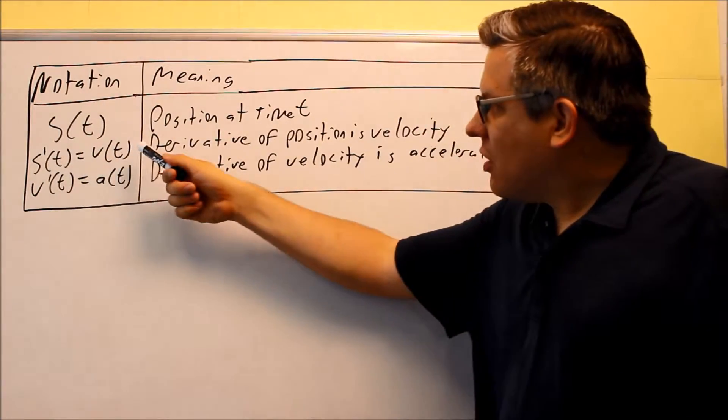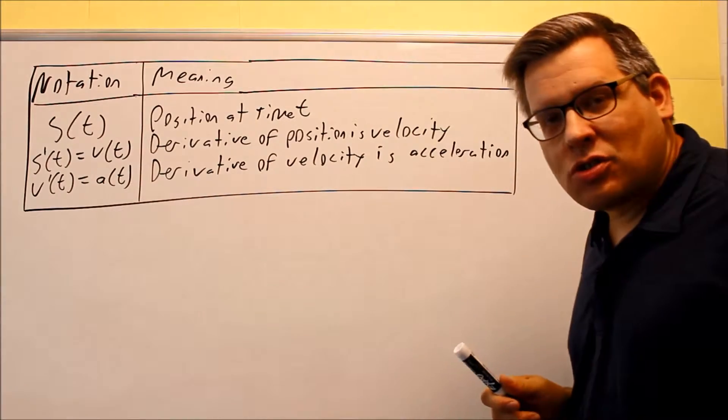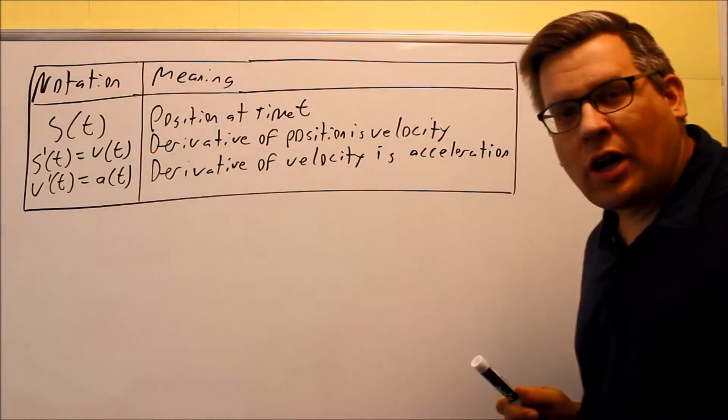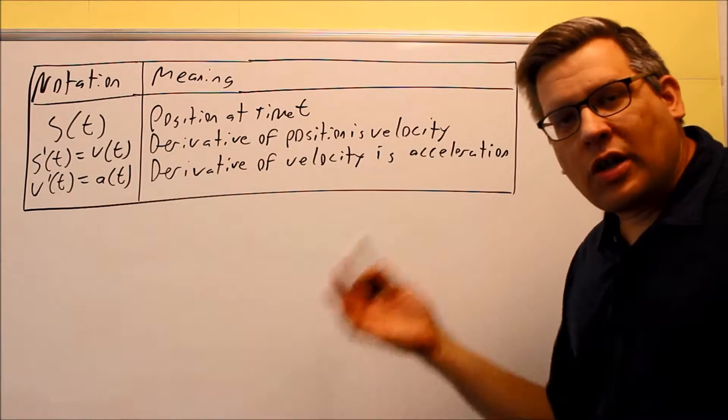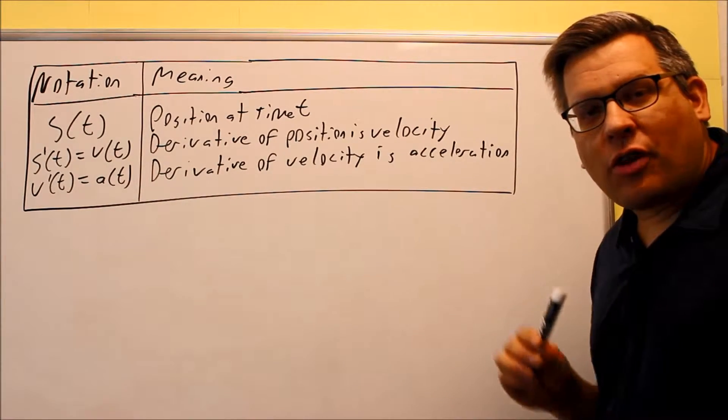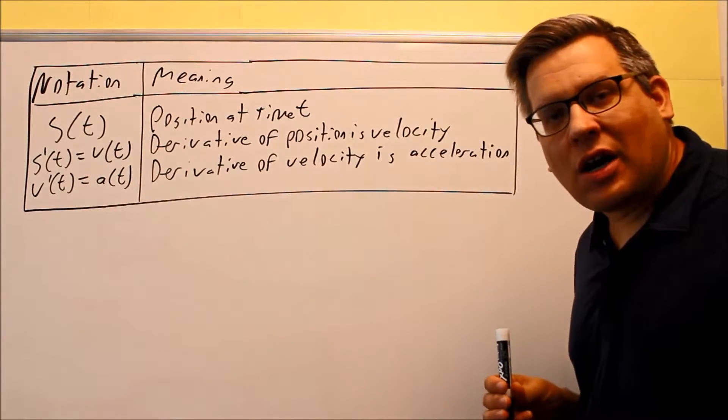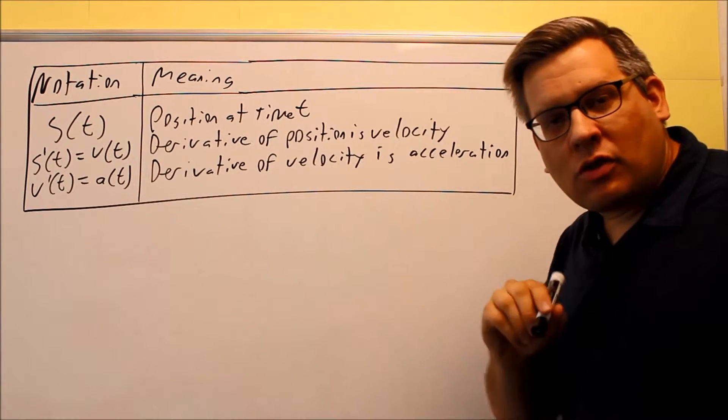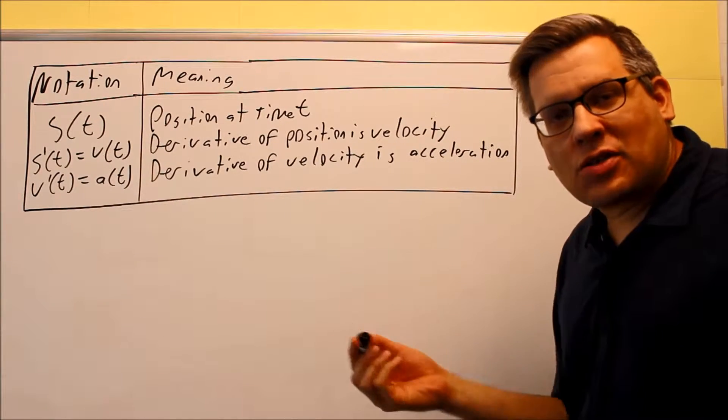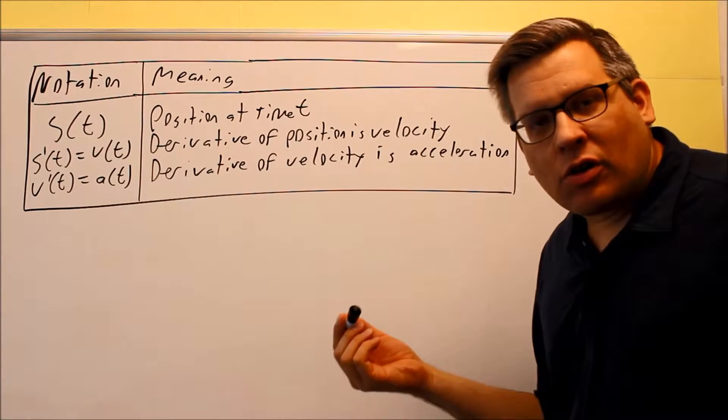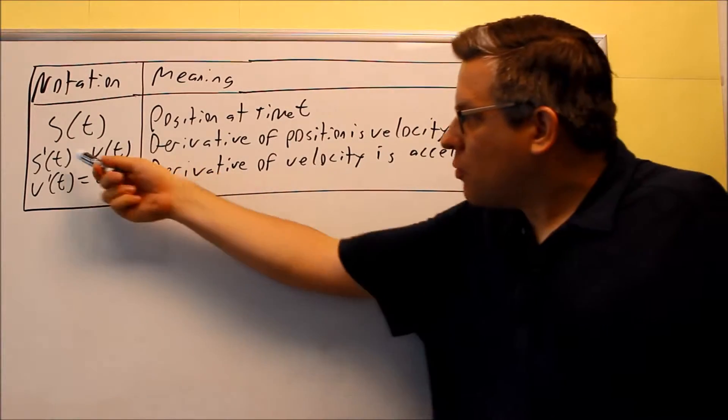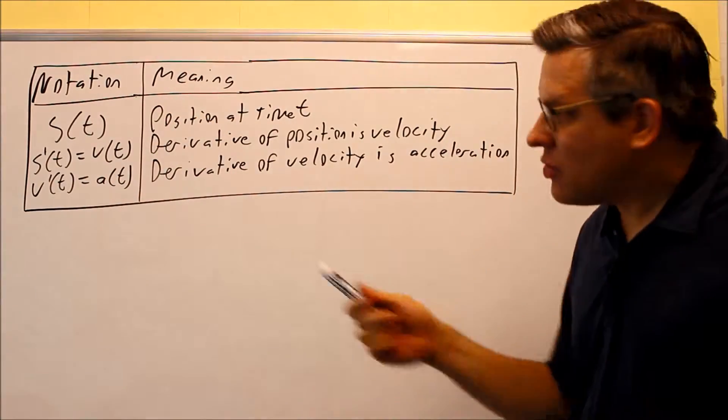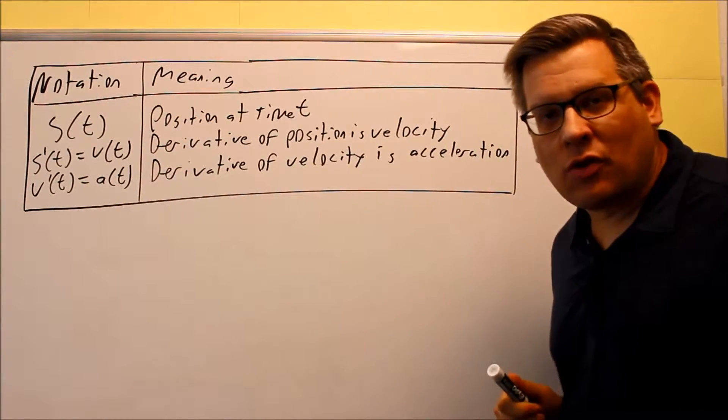Second thing is if we take the derivative of position, we're going to get our velocity function. So the derivative of position is velocity. If we had a graph of position versus time, if we look at the slope, we might get something like miles per hour or meters per second. So that's the slope of position is velocity. That means that slope is the same thing as derivative.